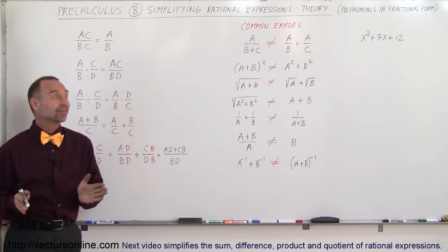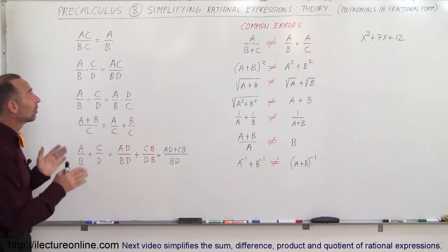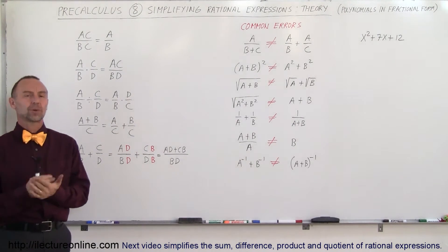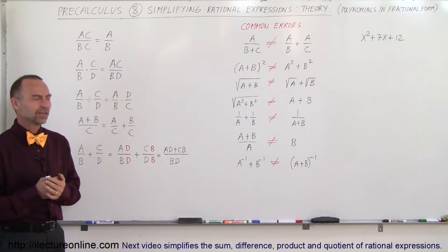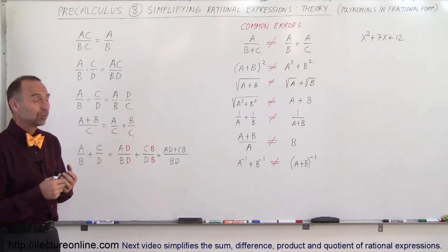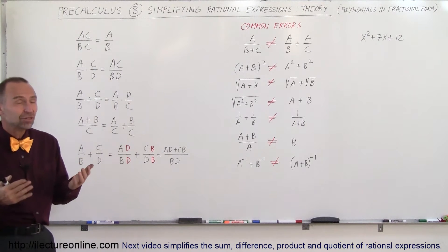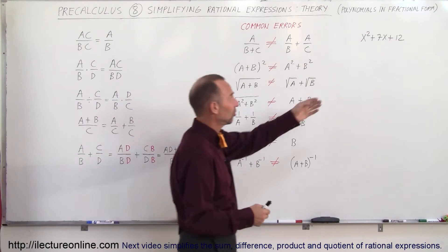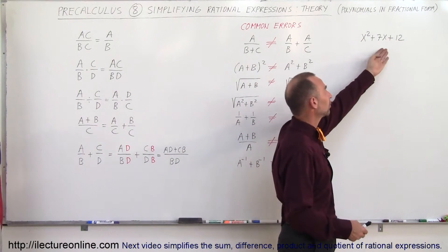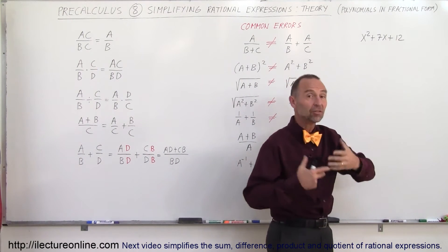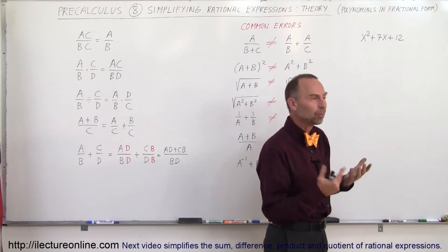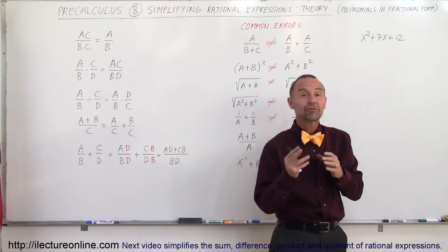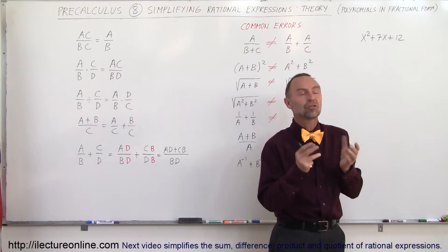Welcome to ElectronLine. The next topic is simplifying rational expressions. An expression is a sum of terms — for example, x squared plus 7x plus 12 would be considered an expression, which is differentiated from an equation.